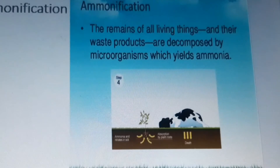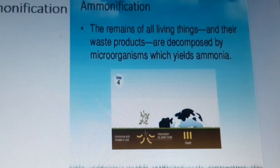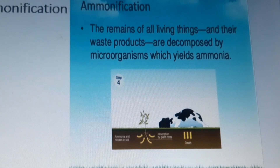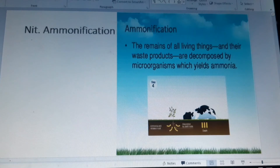The third stage is ammonification. Ammonium in soil is made by nitrogen-fixing bacteria and decomposers — bacteria and fungi that break down dead organisms into their component parts. This process is called ammonification.